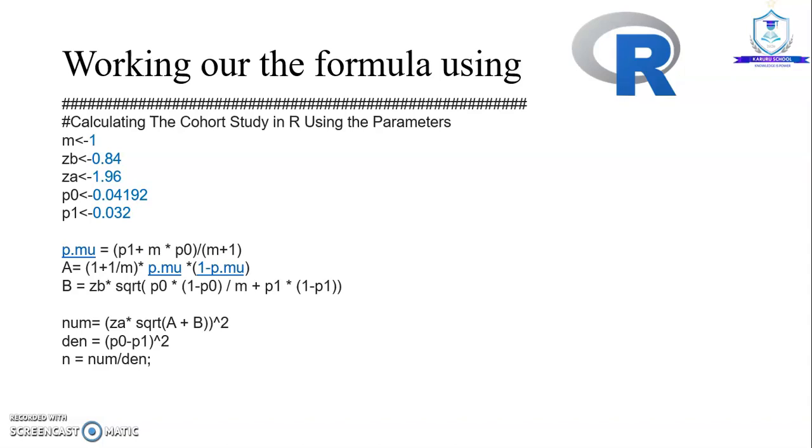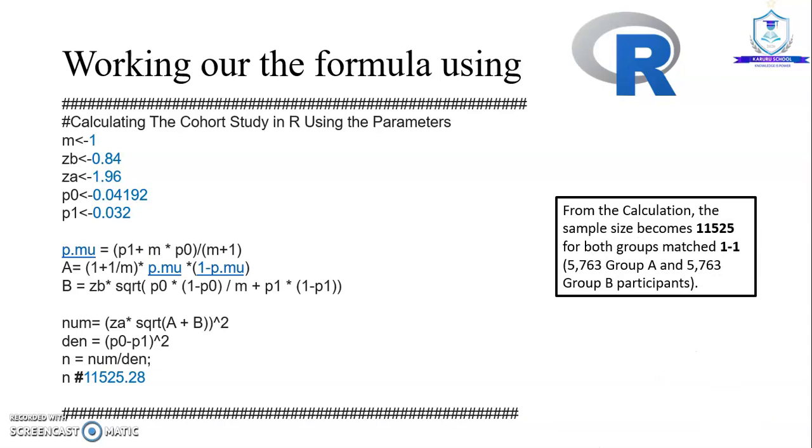I evaluated it and eventually obtained my sample size as 11,525 for both groups which were matched one to one. This implies that each of the groups had to have 5,763 for each group, that is group A and group B.